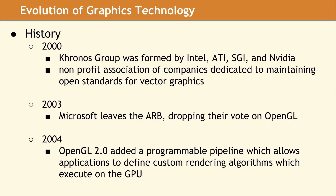In 2000, an industry group made up primarily of hardware developers was formed. This was the launch of the Khronos Group. The purpose of this committee was to develop and maintain open standards for vector graphics. In the beginning, they had no association with the OpenGL project.